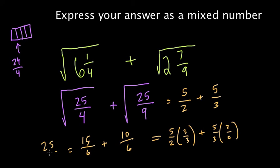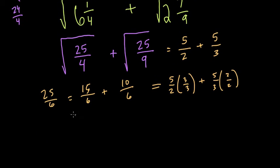Now we have 25 sixths. And we can write this as a mixed number. 6 goes into 25 four times, so it's four wholes. And what's left over? 1 sixth. So that's our answer. All right, thanks.